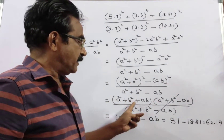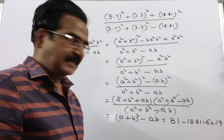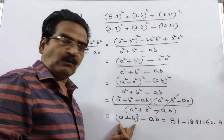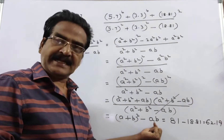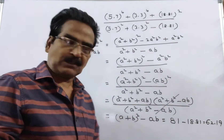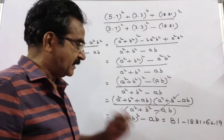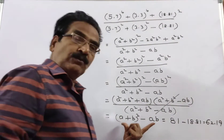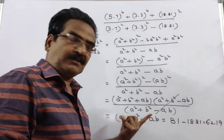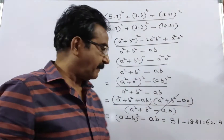Friends, A squared plus B squared plus AB can be expressed as A plus B whole square minus AB. A plus B whole square means A squared plus B squared plus 2AB minus AB. So, plus AB remains. Now, the given expression reduces to A plus B whole square minus AB.